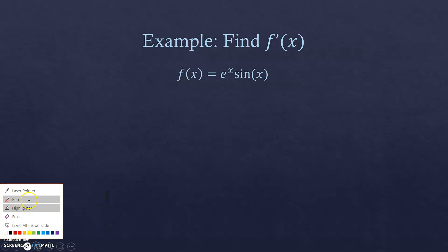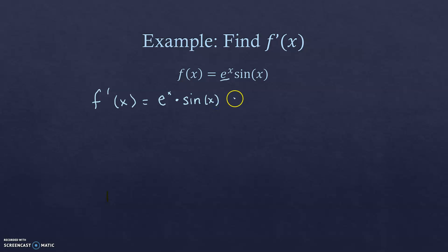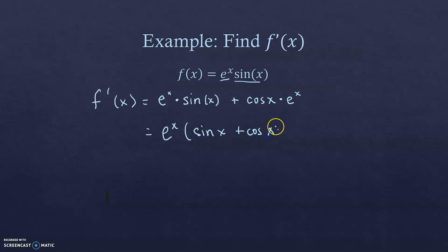First example: find f′(x) given f(x) = eˣ·sin(x). Applying the product rule, f′ = derivative of eˣ times sin(x) left alone, plus derivative of sin(x) times eˣ left alone. That gives f′(x) = eˣ·sin(x) + eˣ·cos(x), which can be simplified to eˣ(sin(x) + cos(x)) if desired.